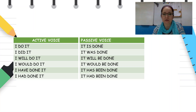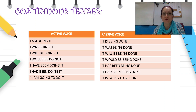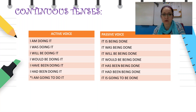'I have done it' → 'It has been done.' 'I had done it' → 'It had been done.' 'I am going to do it' → 'It is going to be done.'